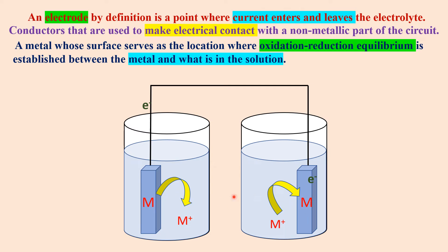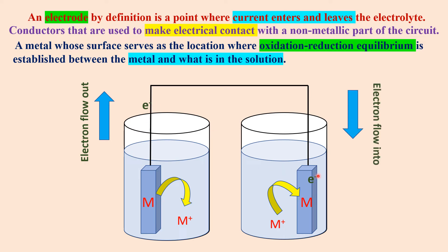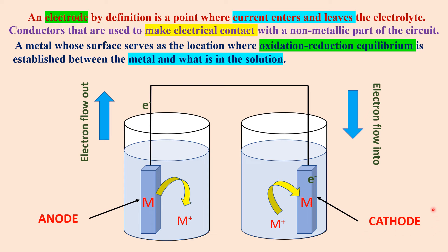Two phenomena occur here. In one phenomenon, electrons flow out from the electrode; in another, electrons flow into the electrode. In the first half-cell, where electrons flow out, the electrode acts as an anode. In the second half-cell, where the electrode gains electrons, it is known as the cathode. Loss of electron is known as oxidation, so the anode is also called the oxidizing electrode, while the cathode is called the reducing electrode because gain of electrons takes place there. Electrodes are thus divided into two categories: anode and cathode.